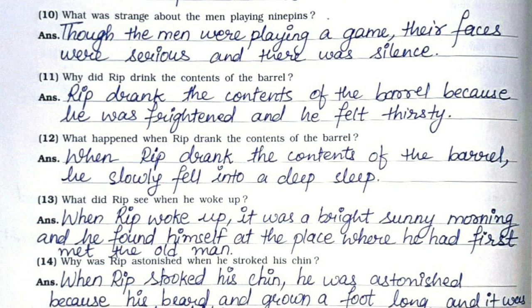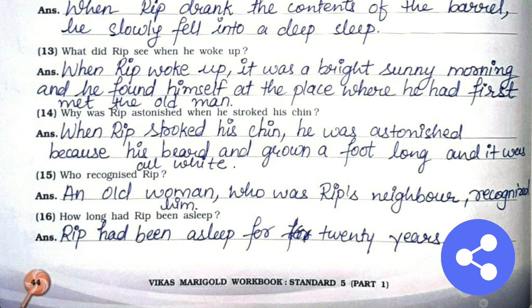Twelfth: What happened when Rip drank the contents of the barrel? When Rip drank the contents of the barrel, he slowly fell into a deep sleep. Thirteenth: What did Rip see when he woke up? When Rip woke up, it was a bright sunny morning and he found himself at the place where he had first met the old men. Fourteenth: Why was Rip astonished when he stroked his chin? When Rip stroked his chin, he was astonished because his beard had grown a foot long and it was all white.